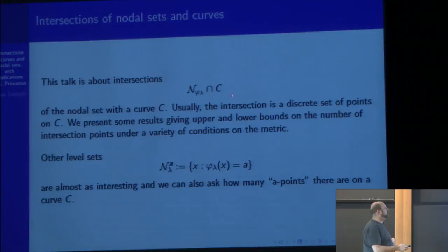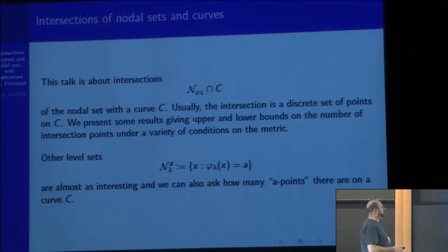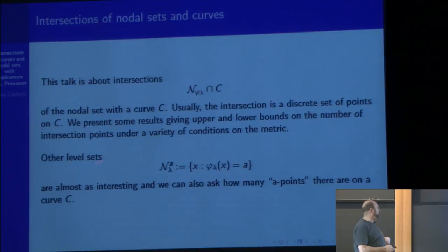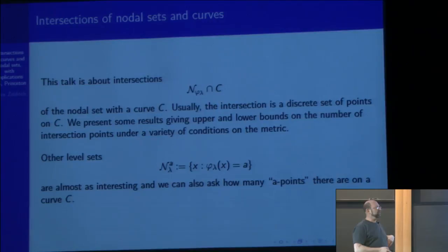We want to talk about intersections of the nodal set with a curve. Usually the intersection is a discrete set of points on the curve, and what we're interested in is giving upper and lower bounds for the number of intersections under a variety of conditions. It's a very classical problem that goes back to Pólya and others — just to count zeros of a function on a curve. Although I won't stress it, I have a new article about other level sets besides the zero set.